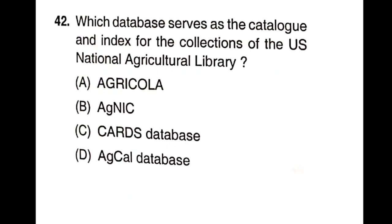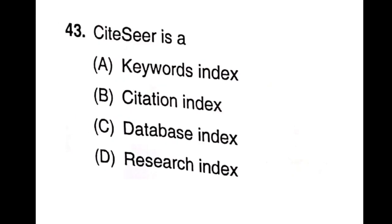Question 42: Which database serves as the cataloging and index for the collections of the US National Agriculture Library? Options: Agricola, AGNIC, CODS database, AGCOL database. Agricola is the right answer, option A. Question 43: Which index introduced keyword indexing around 1970? The answer is Research Index, option D.